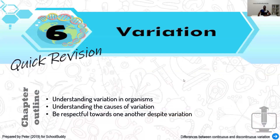We are coming to the last chapter of this Form 5 biology, which is called variation. We are talking about what caused variation in humans, and we need to understand the importance of respecting other people — how they appear in terms of skin color, hair color, and so on.